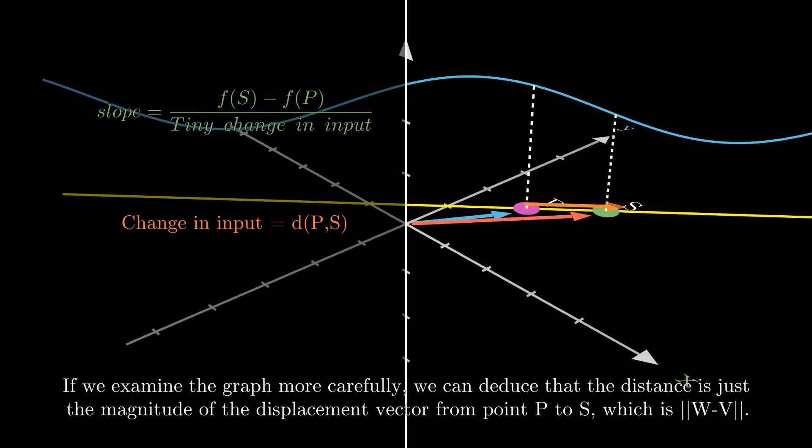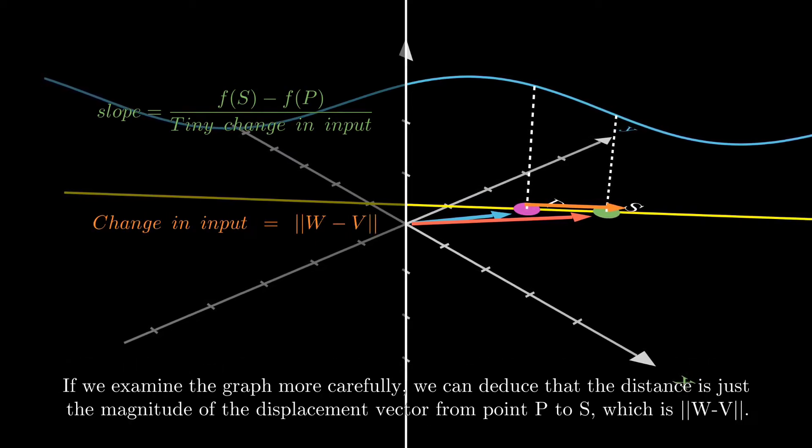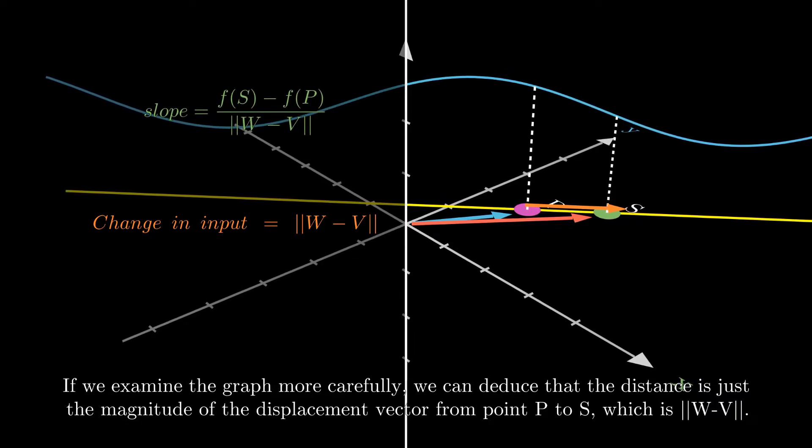If we examine the graph more carefully, we can deduce that the distance is just the magnitude of the displacement vector from P to S.